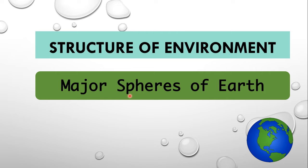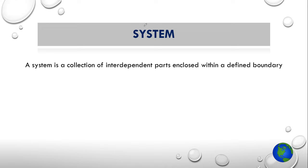Before we begin with the spheres of environment, we need to understand what is a system. A system is a collection of interdependent parts which are enclosed within a defined boundary. It has a defined boundary and there are some interconnected parts which are dependent on each other. In the same way you can treat your environment as a system. This is called ecosystem.